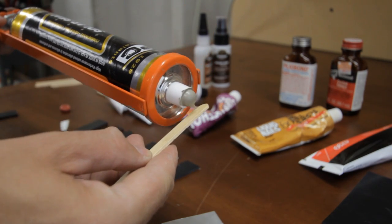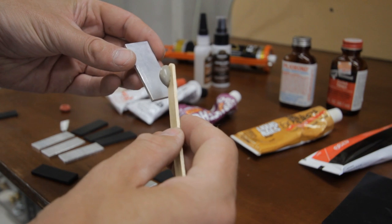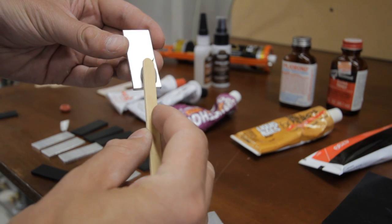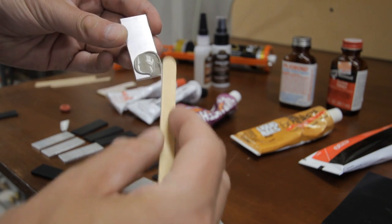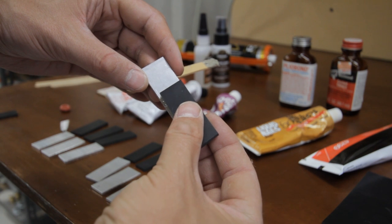First up, some solar seal caulk. I love this stuff. It's extremely sticky and remains flexible for years.